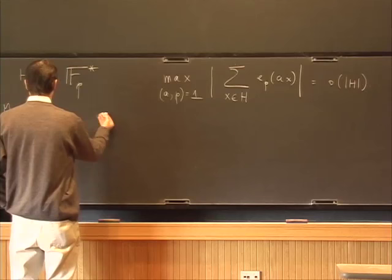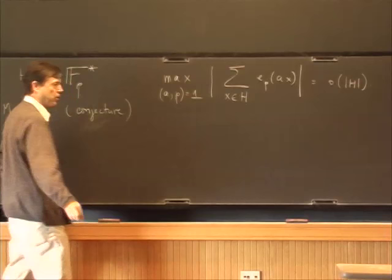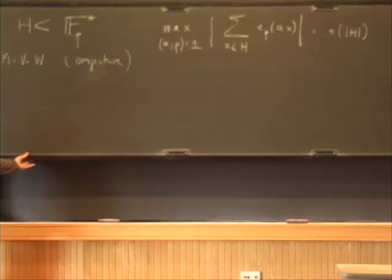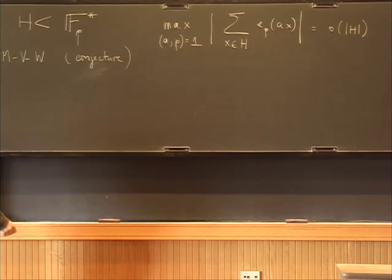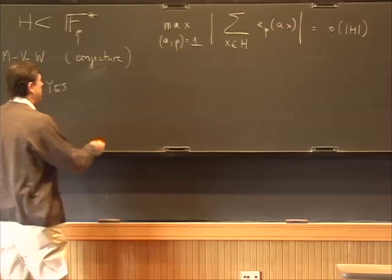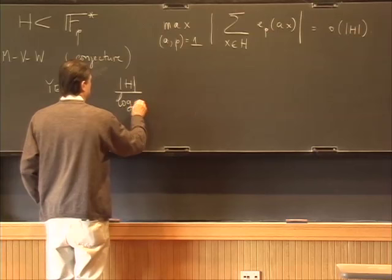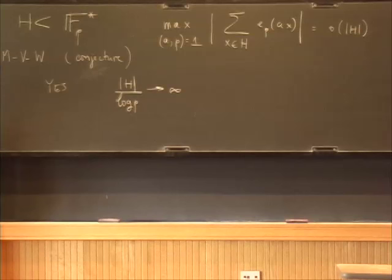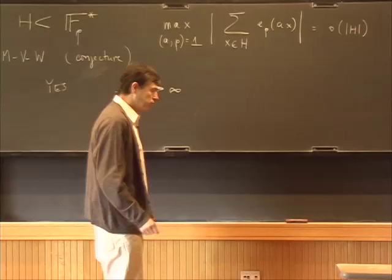There is a conjecture by Montgomery, Vaughan, and Woolley, which is extremely strong, and tells you that this holds provided — that's a conjecture — very far from being proven at this point. Since I have to distinguish between conjectures, theorems and problems, I'll try to be quite consistent from the beginning.